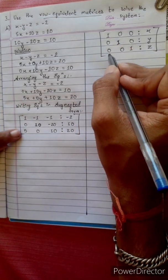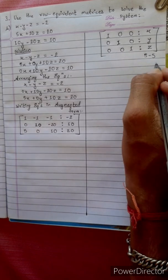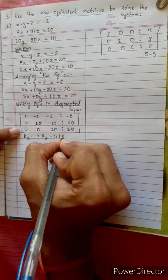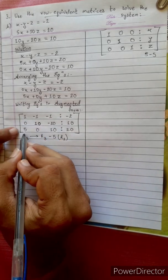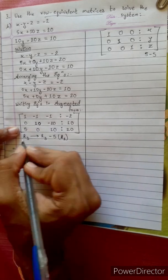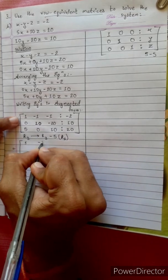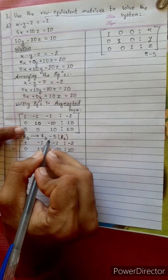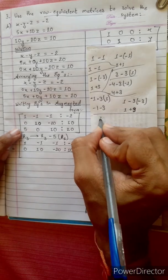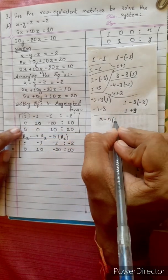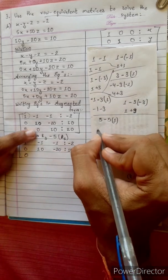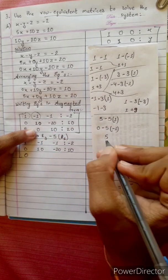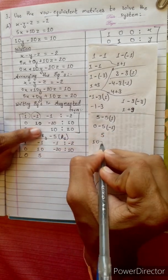Now R1 and R2 already have 0. We need to eliminate the first column of the third row. 5 minus 5 is 0, simple. Change the third row into R3 minus 5 times R1. The first row R1 stays as 1, minus 1, minus 1 | minus 2. For the new R3: 5 minus 5 times 1 gives 0.